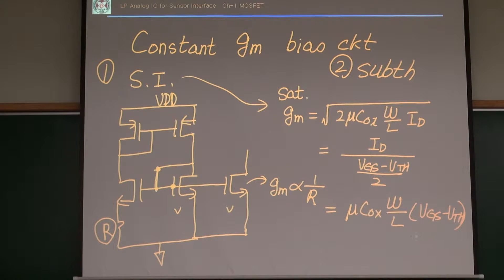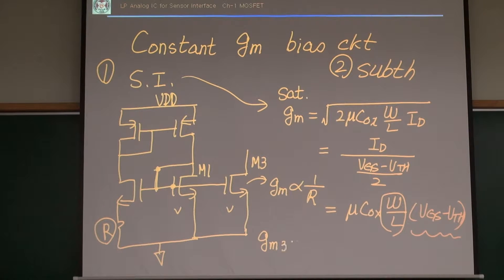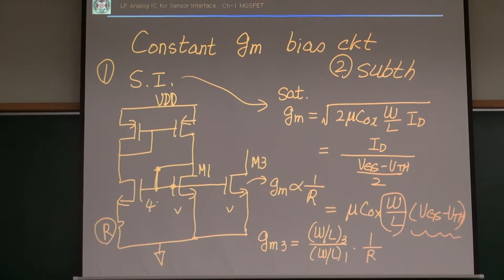For those two transistors, the gate-source voltages are the same, so gm depends on the W/L ratio. For example, this is M1 and this is M3 — gm depends on the W/L ratio. Since the W/L ratio is set to make the result independent of current, gm is just proportional to 1/R. That's why we call it a constant gm bias circuit.